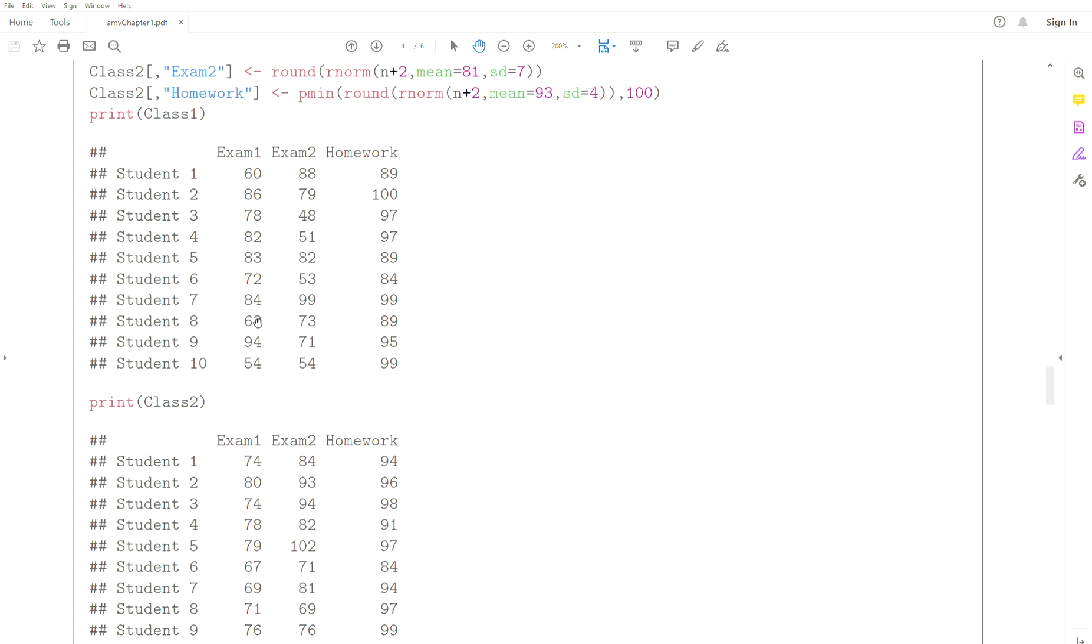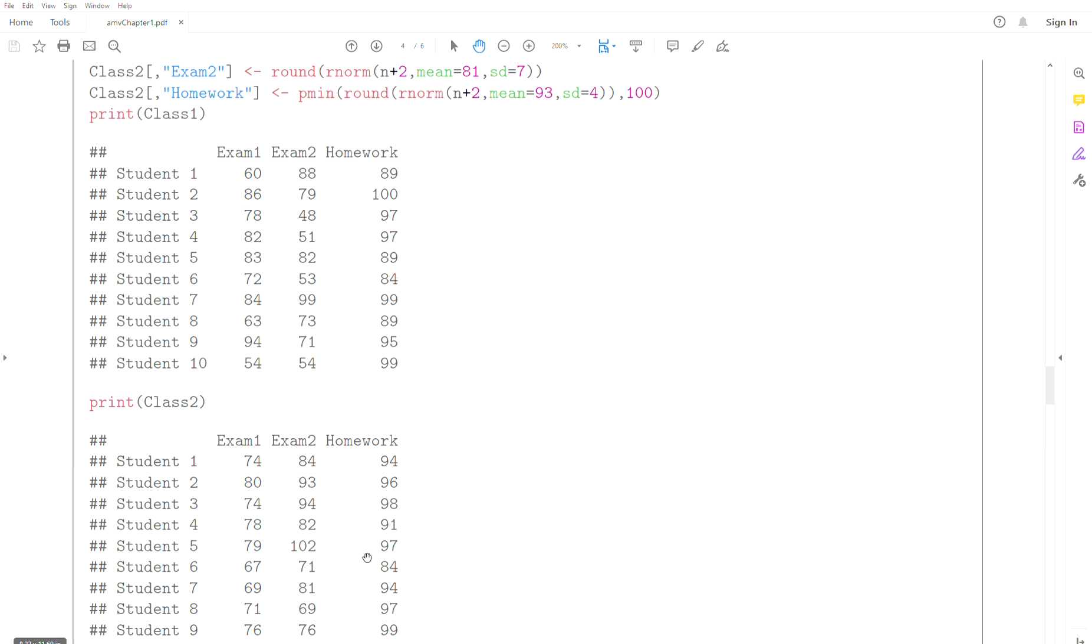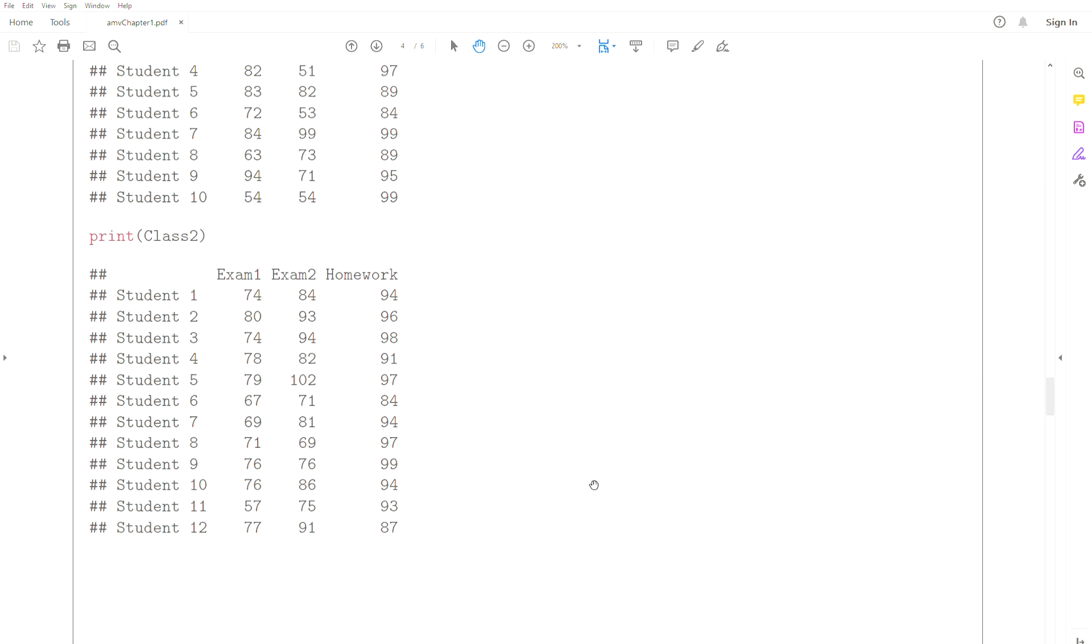Now notice that class one is stored in object class one, and class two information is stored in class two. Now generally, this is not how we store information in multivariate analysis. We collect it in one data matrix.